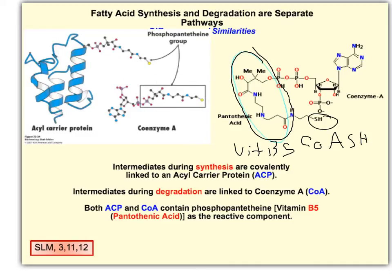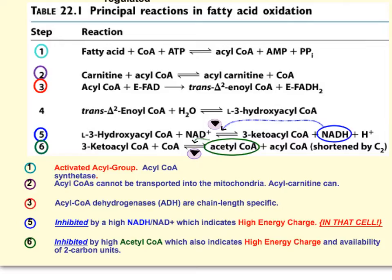As we study beta-oxidation, coenzyme A is going to be very important. The first step in fatty acid oxidation is attaching the fatty acid to a coenzyme A, creating acyl-CoA — where acyl is the fatty part.